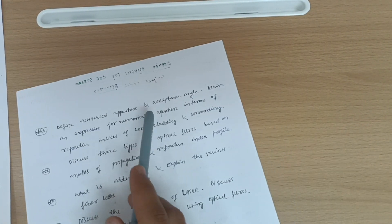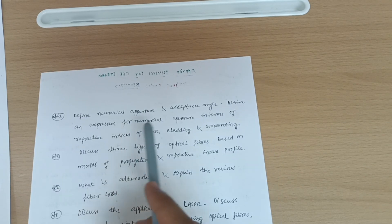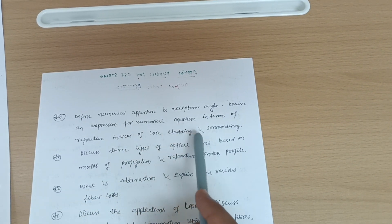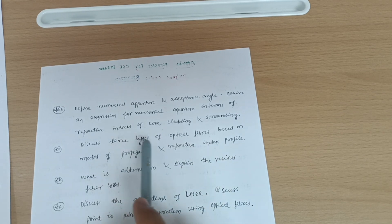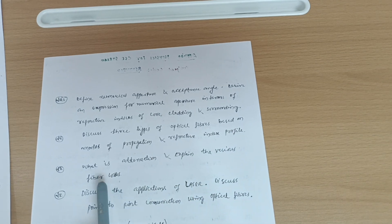Next, define numerical aperture and acceptance angle. Derive an expression for numerical aperture in terms of refractive indices of core, cladding, and surrounding. Next is discuss three types of optical fibers based on the modes of propagation and refractive index profile. Next possibility may be what is attenuation and explain the various fiber losses.